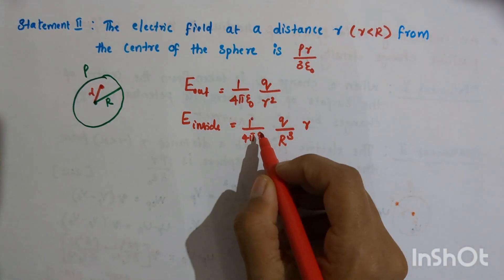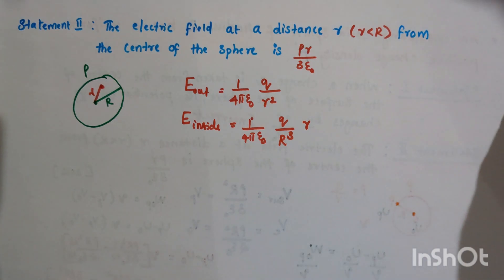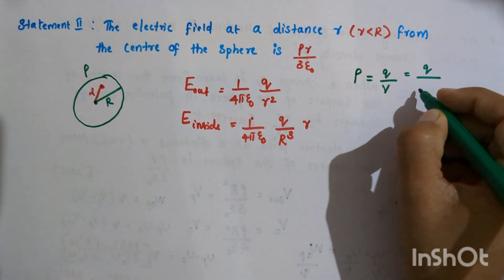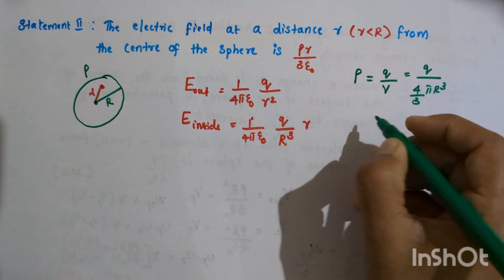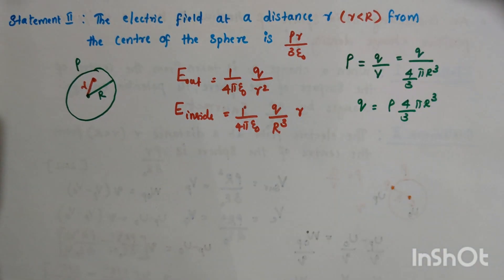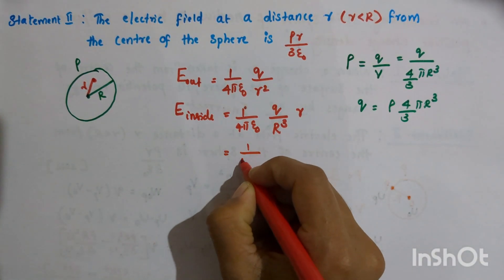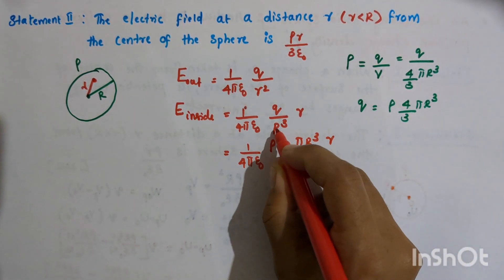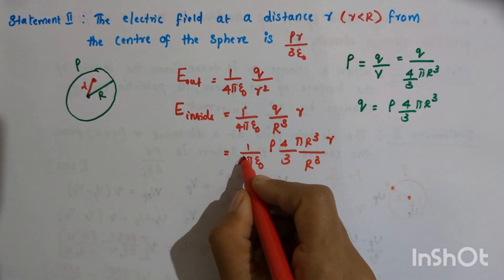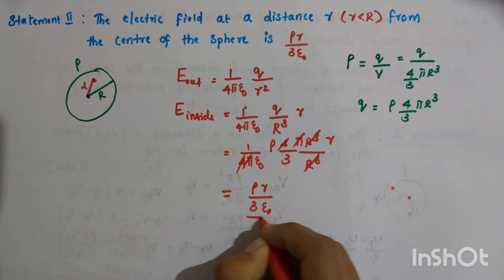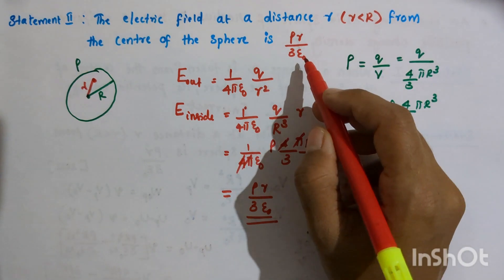The expression for the electric field inside the sphere is (1/4 pi epsilon 0) times Q by R cubed times r. Since the volume charge density rho equals charge per unit volume, we have Q equals rho times (4/3) pi R cubed. Substituting this, the expression becomes (1/4 pi epsilon 0) times rho (4/3 pi R cubed) times r divided by R cubed. The factors of 4, pi, and R cubed cancel, leaving rho r divided by 3 epsilon 0, exactly as given in Statement 2. So Statement 2 is a correct statement.